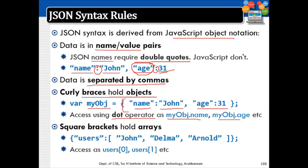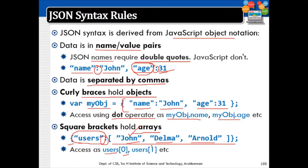Square brackets are used to hold arrays in JSON. Write a square bracket and give the name of the array within double quotes, then after a colon give the values of the array within square brackets, one by one in comma-separated format. Arrays can be accessed using an index, similar to regular array access: users[0] accesses the value 'John', users[1] accesses 'Delma', etc.